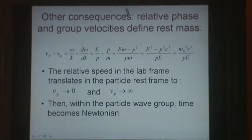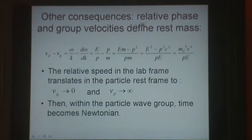There are other consequences for this travelling wave group. The relative phase and group velocities define rest mass: Vp minus Vg equals m0 squared c to the fourth divided by p times E, momentum times energy. Secondly, the relative speed in the lab frame translates in the particle rest frame to Vg equals zero and phase velocity equals infinity. Then, within the particle wave group, time becomes Newtonian.